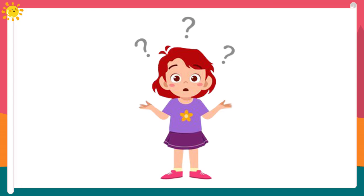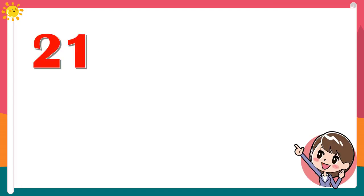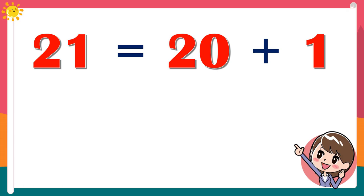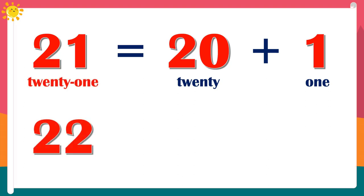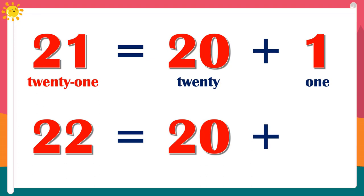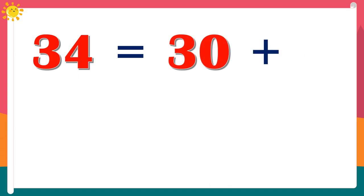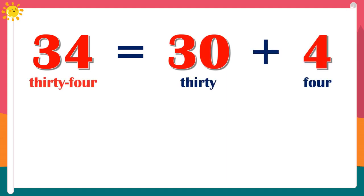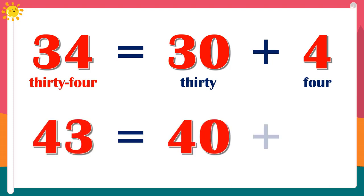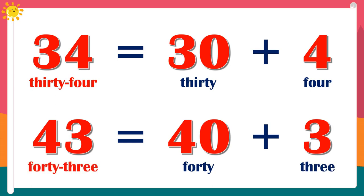Vậy với các con số không tròn trục thì các bạn sẽ nói như thế nào? Chúng ta cùng nhau nhìn vào hướng dẫn trên màn hình nhé. 21, 22. Các bạn lưu ý 21, 22 — các bạn phải sử dụng gạch ngang ở giữa. Next one: Is number 34. Is number 43.